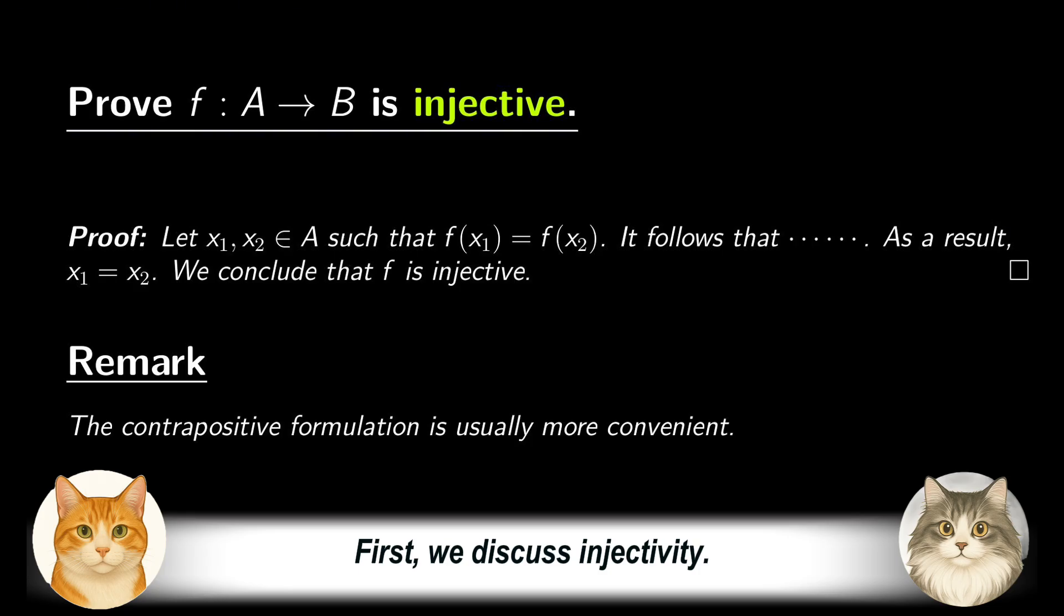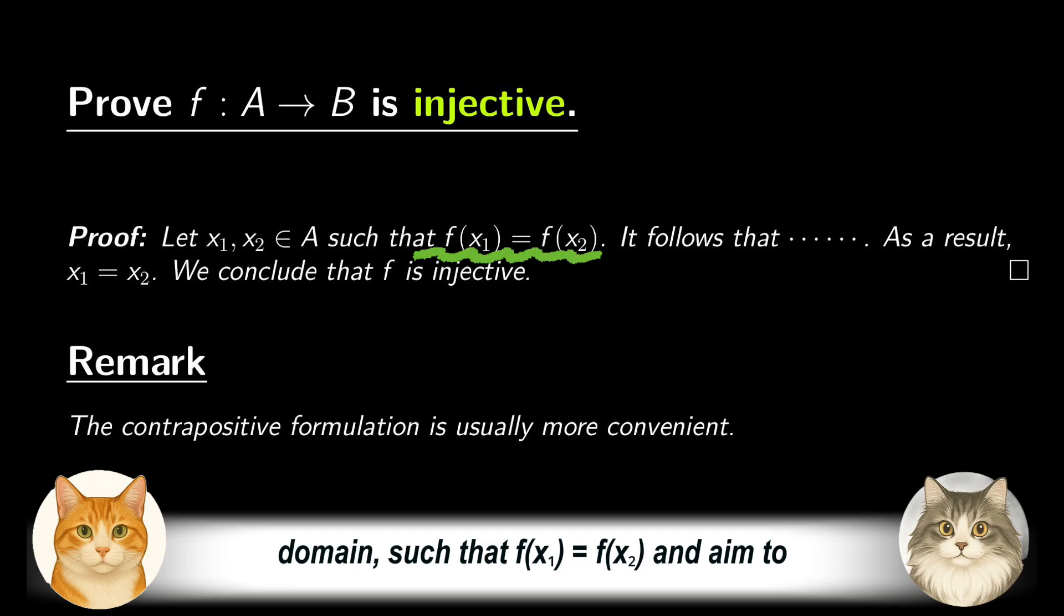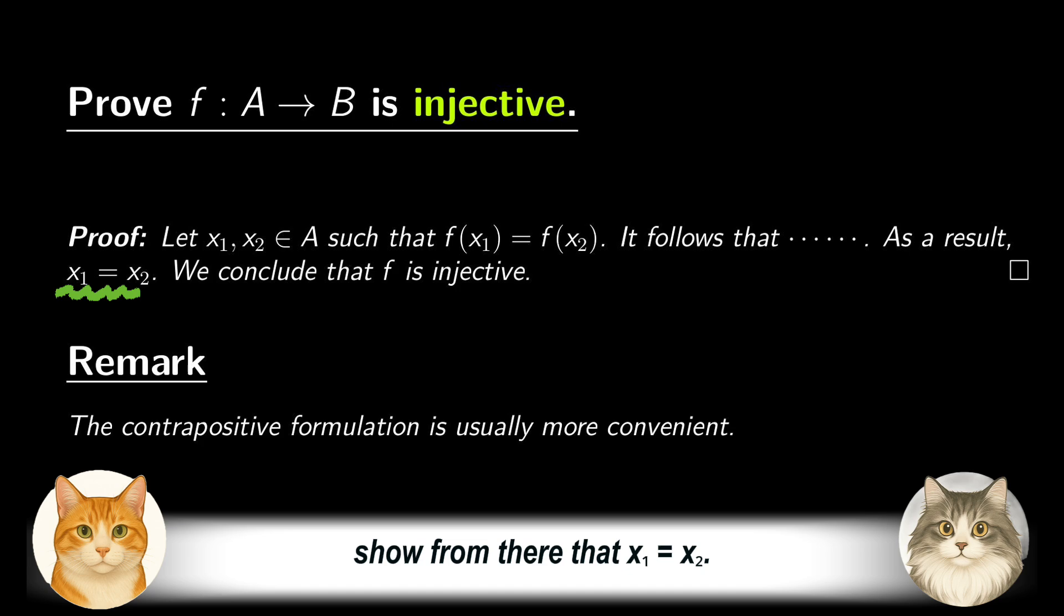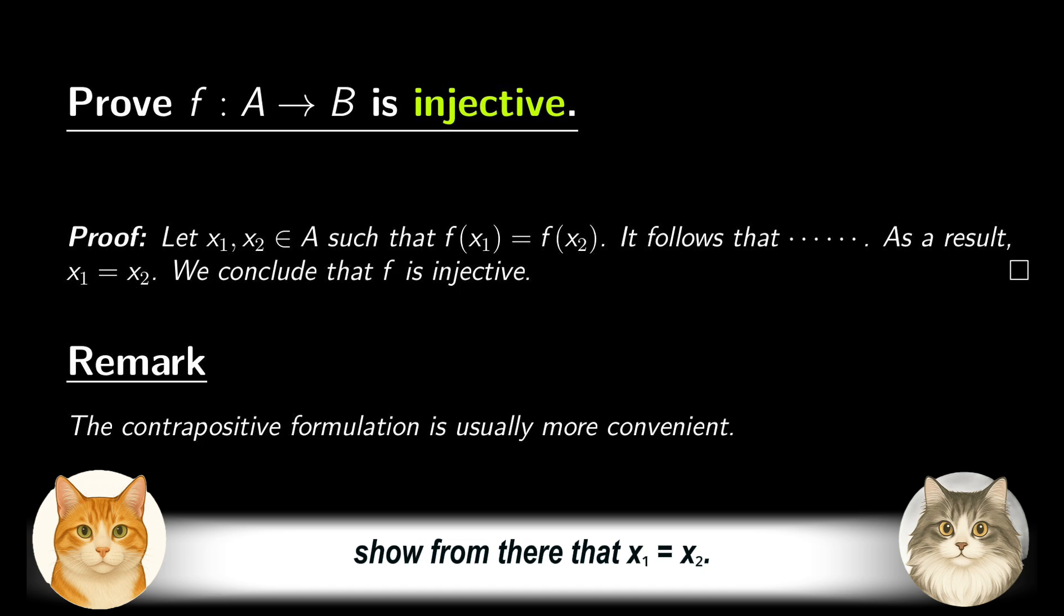First, we discuss injectivity. To prove that a function f from A to B is injective, we start by letting x₁ and x₂ be two arbitrary elements in the domain, such that f(x₁) is equal to f(x₂), and aim to show from there that x₁ is equal to x₂.